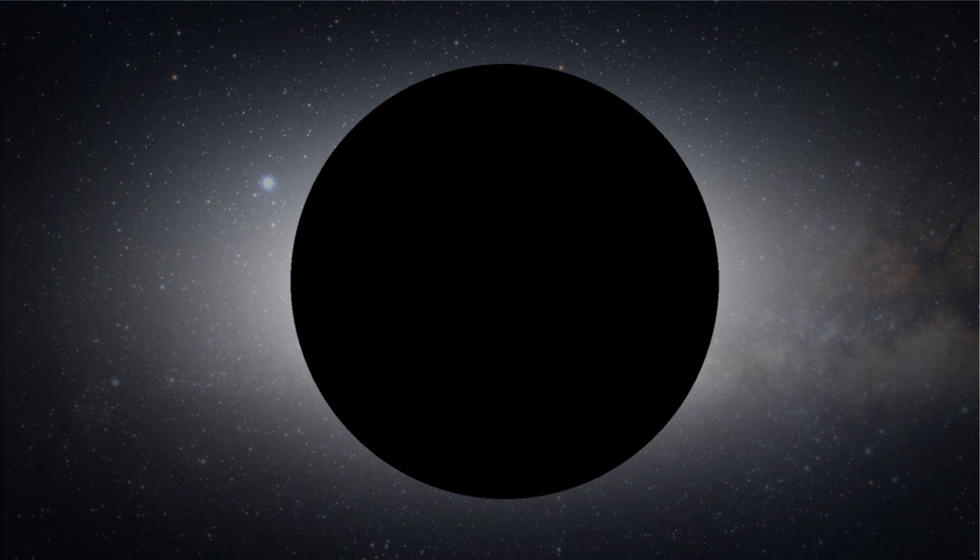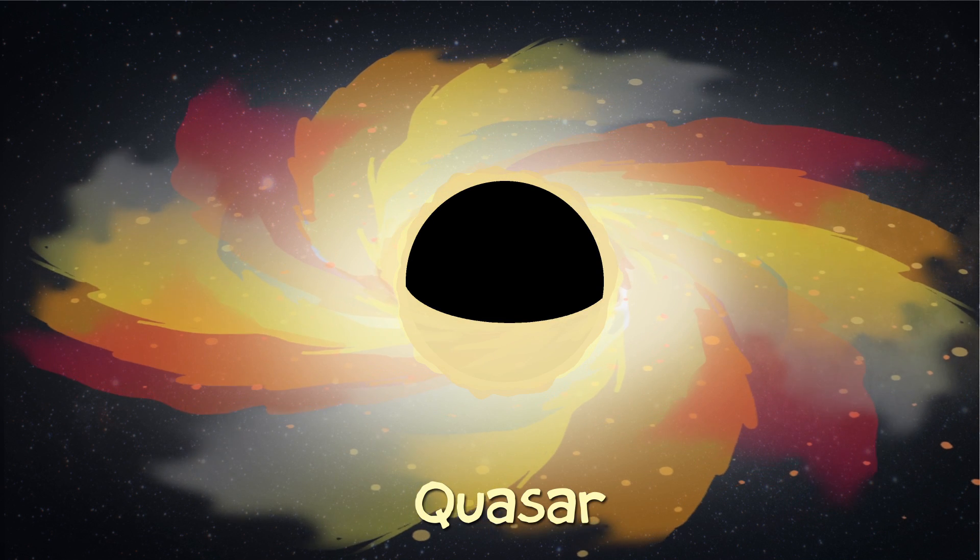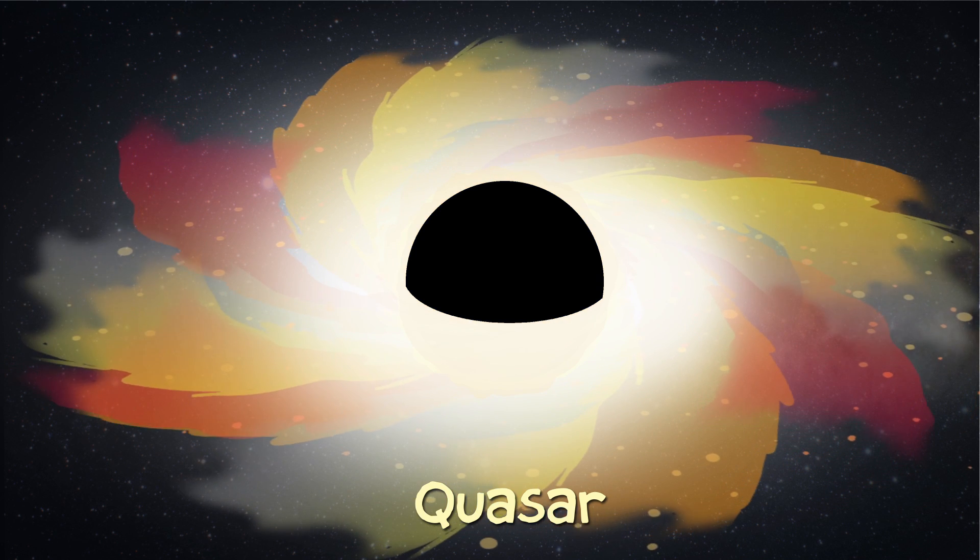So a quasar is a supermassive black hole with this big accretion disk of swirling gas and is really, really bright. So a quasar is like a black hole that you can see.